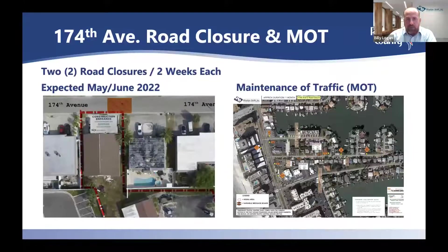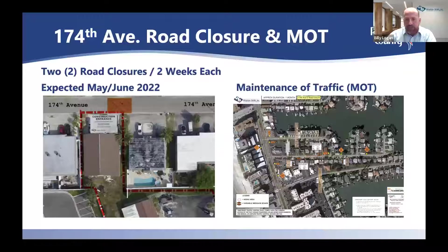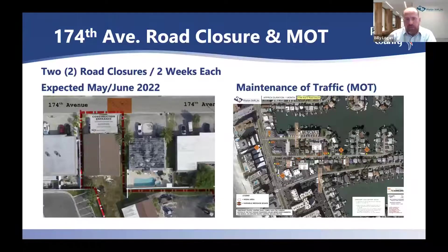As Ted mentioned, we will have a couple of road closures. The first is on 174th Avenue. The picture on the right is the preliminary maintenance of traffic plan that has been put together — that's basically the signage and detours that will be put up prior to construction activities. This will be placed into service one week prior to shutting down the road so the community can get used to the detours. The area hatched in red on the left picture is where we will be cutting into the road and having a road closure for our bypass. This will be two separate road closures, approximately two weeks each, starting sometime around May or June of 2022.